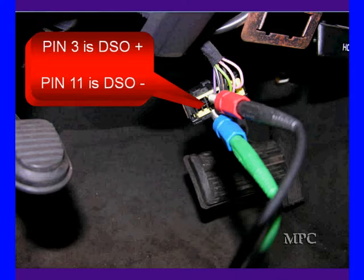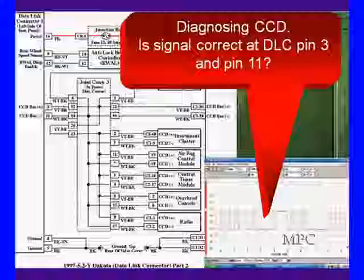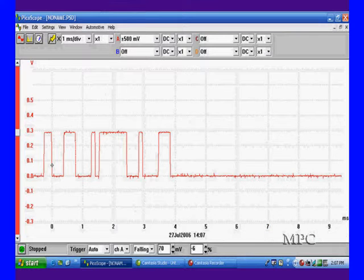We're going to go put our scopes in here. Remember, we're hooking them up differentially. Pin 3 and 11, plus in 3, and minus in 11. We should get a good signal. This is what it'll look like. And the only difference is, if we hook them up wrong, they'll be inverted, but it just messes with your mind. What happens if this signal doesn't look good like this? What do we do?